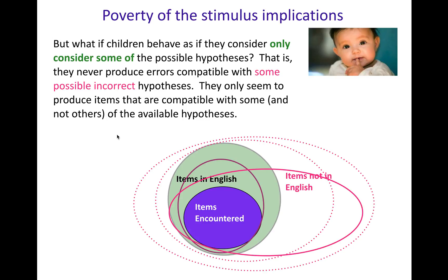But here's an interesting situation. What if children behave as if they consider only some of the possible hypotheses? They never produce errors that are compatible with some of these possible incorrect hypotheses. They only seem to produce items that are compatible with some and not others of the available hypotheses. They maybe never produce errors out here, but maybe they do produce some errors here — they somehow know to ignore these, even though these are just as compatible with that input data.